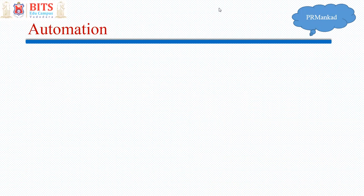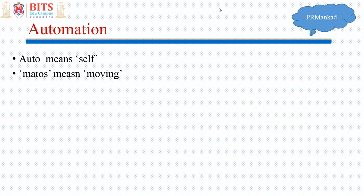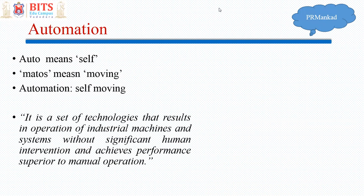Now the word automation — if you look at the etymology or the origin of the word, it is made up of two words: 'autos' meaning self, and 'matos' meaning moving. So automation means automatic, that is self-moving. In short, the definition is: it is a set of technologies that results in operation of industrial machines and systems without significant human intervention. The keyword here is significant human intervention.